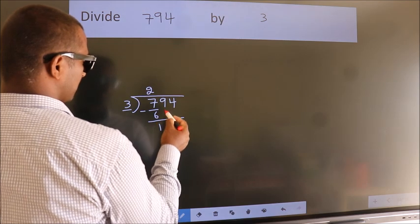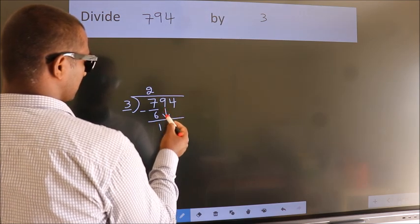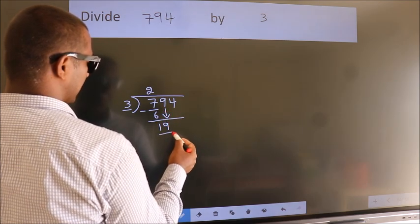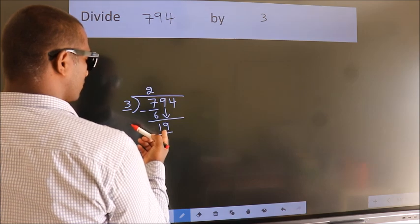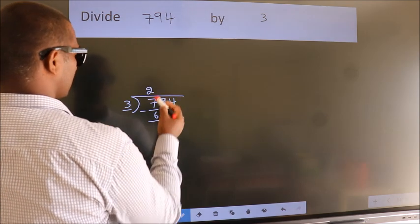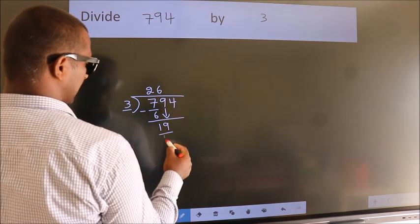After this, bring down the beside number, so 9 down. So 19. A number close to 19 in the 3 table is 3 times 6 is 18.